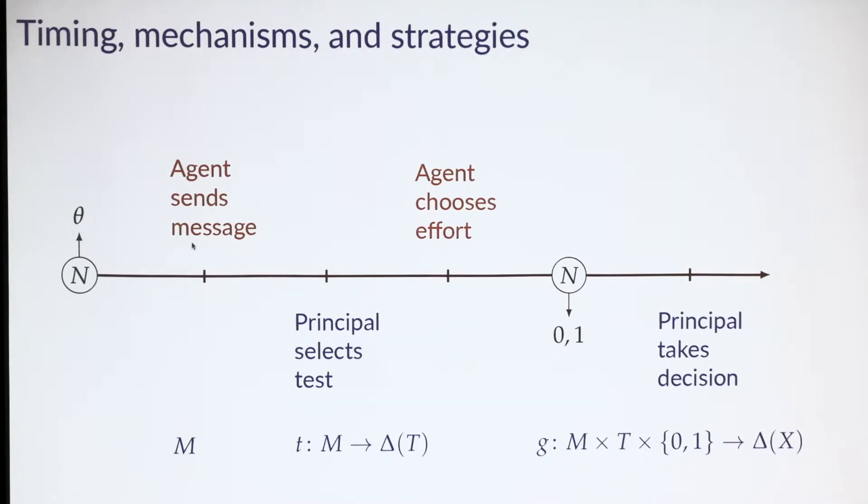Given this mechanism, the agent chooses a strategy. The agent faces a dynamic decision problem, and the strategy has two components. First, the agent chooses what message to send as a function of type. Then, after receiving a test, the agent chooses the probability with which to exert effort. This probability can depend on the agent's true type, the message he sent, and the test the principal selected.